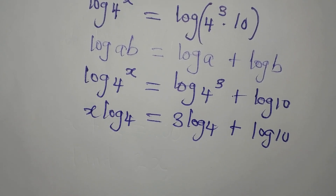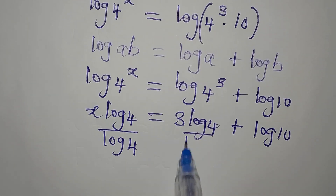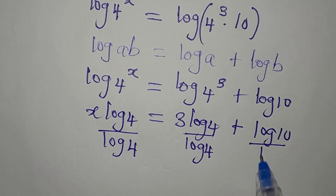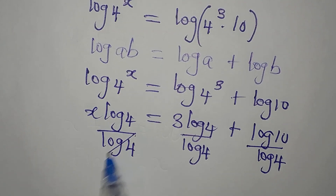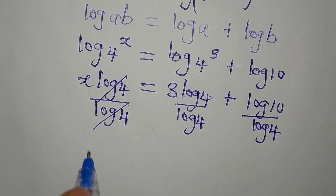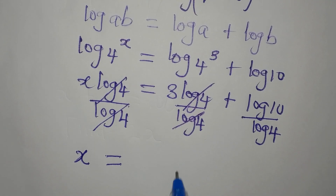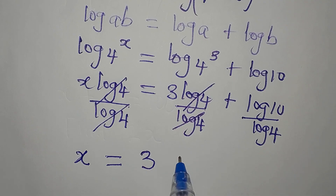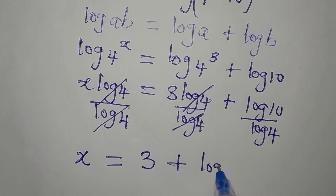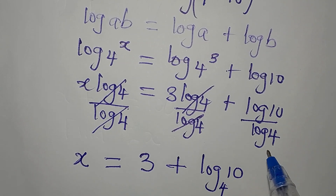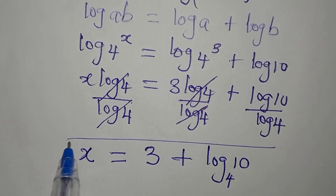The power will come down in front, so here we'll have x log 4 equal to 3 log 4 plus log 10. Now I have to divide everything by log 4 so that x will be isolated. So x equals 3 plus log 10 divided by log 4. Applying change of base, we have x equal to 3 plus log 10 to the base of 4.